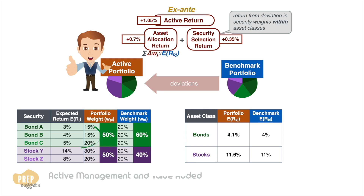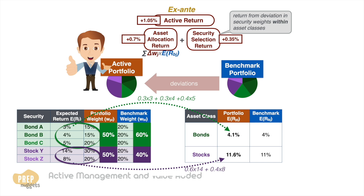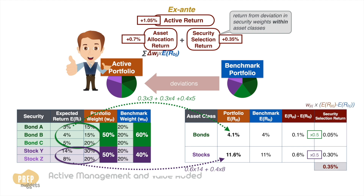The security selection return can be calculated on its own. We need to determine the expected return of each asset class based on the within-class weight of each security. For bonds, the respective weights are 0.3, 0.3, and 0.4, so the expected return for bonds is 4.1%. For stocks, this works out to 11.6%. Comparing the portfolio returns with that of the benchmark, we have an excess return of 0.1% for stocks and 0.6% for bonds. Based on the portfolio weights, the active return from security selection is 0.35%, consistent with what we calculated earlier.